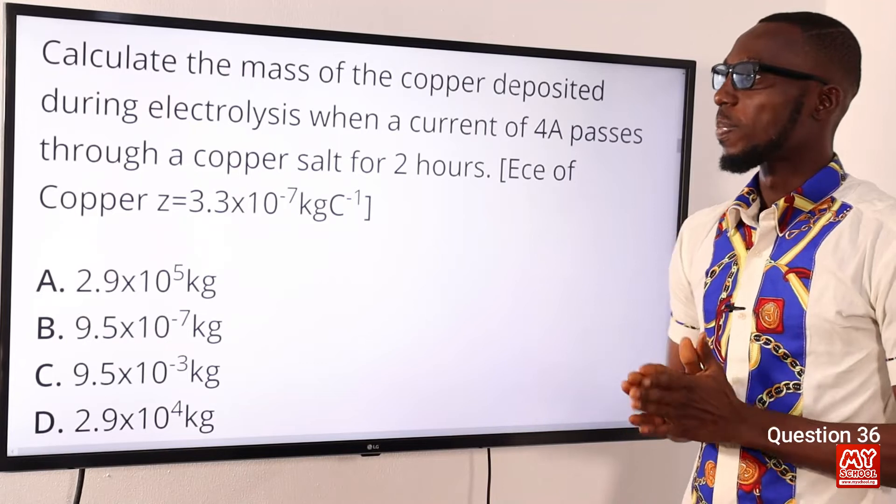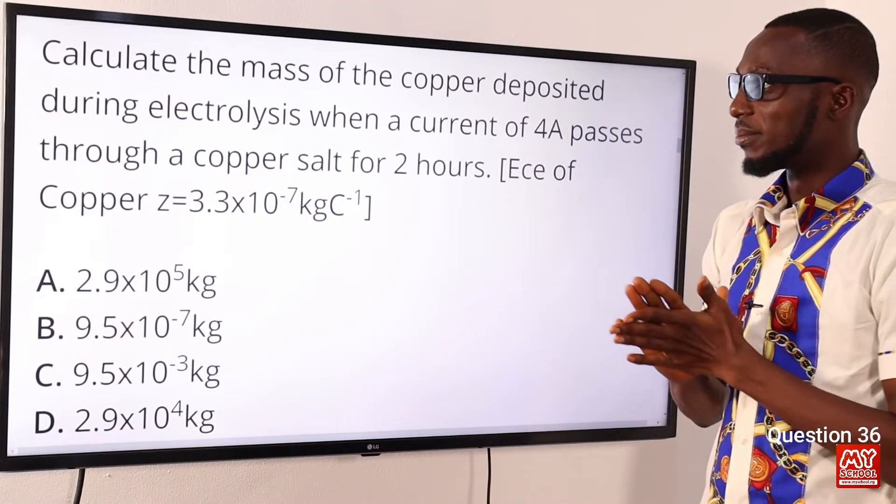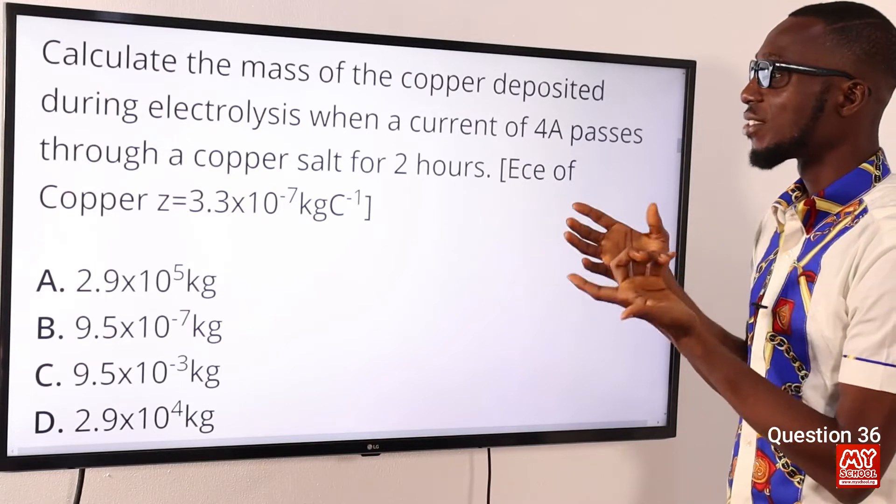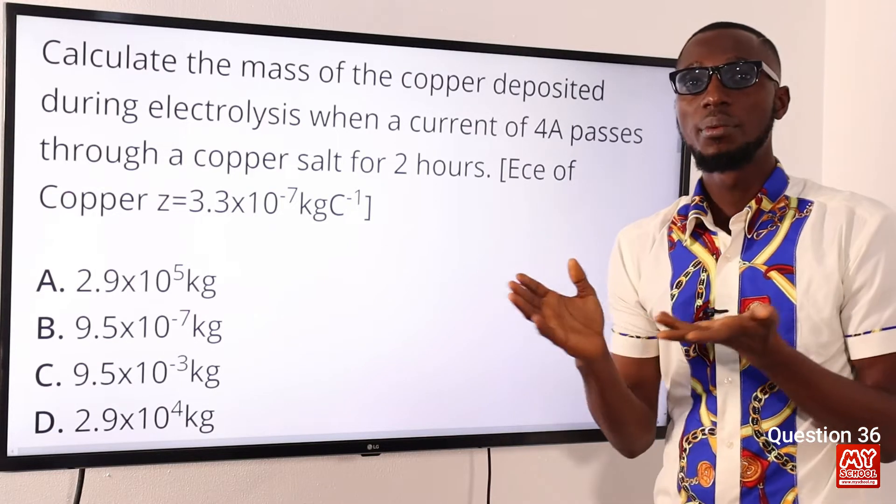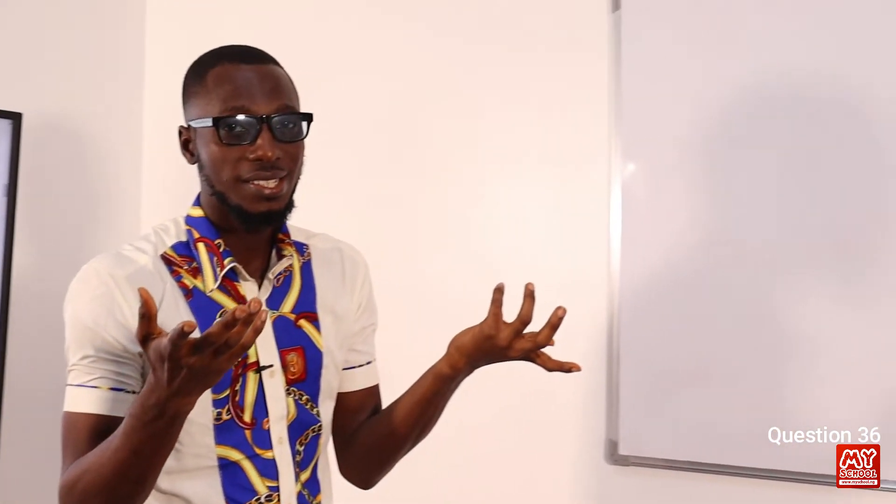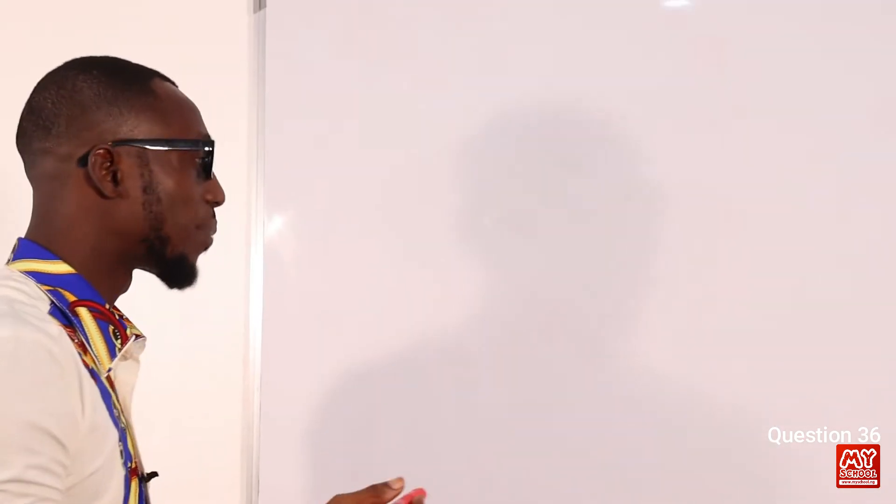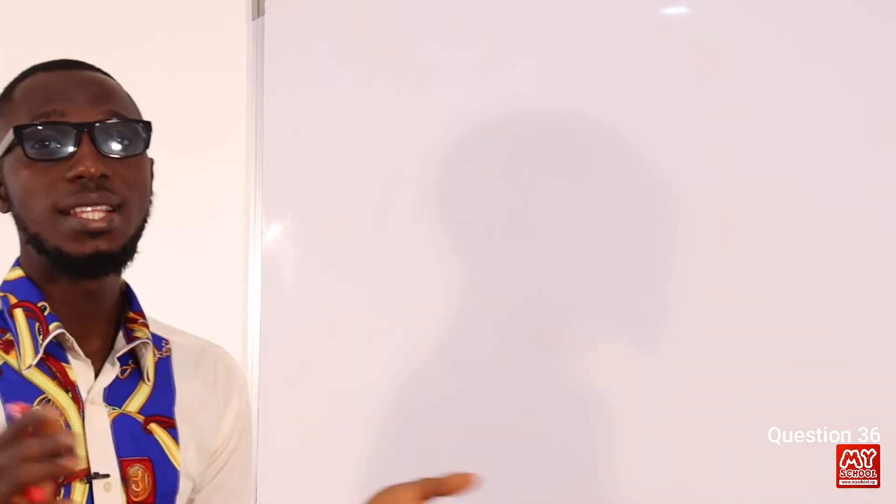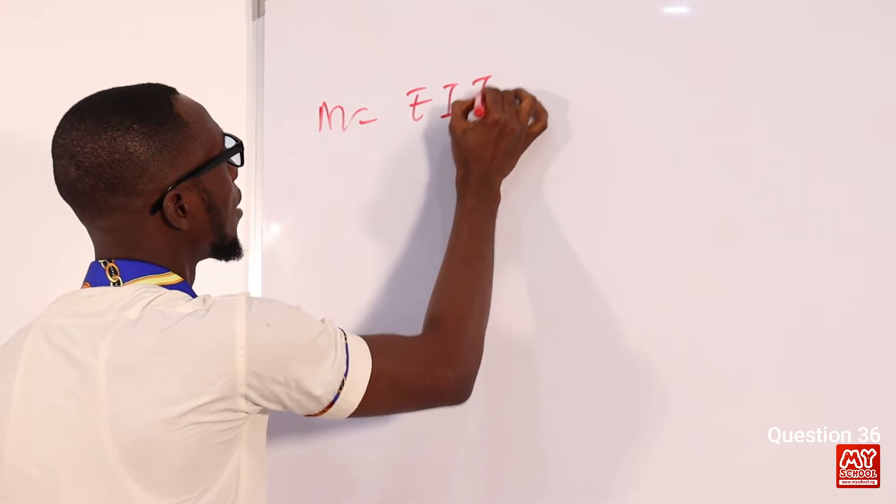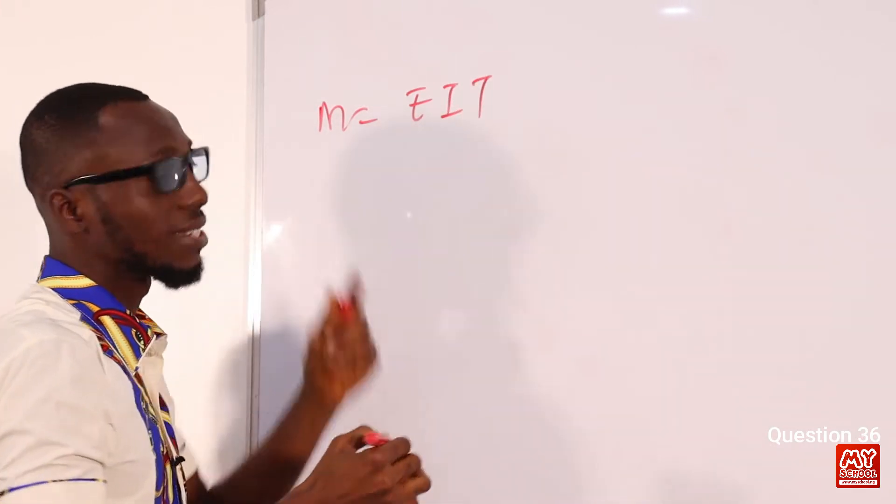Number 36. Calculate the mass of the copper deposited during electrolysis when a current of 4 ampere passes through a copper salt for 2 hours. Remember that we are going to be using the Faraday first law of electrolysis, where we have M is directly proportional to Q. So that implies M equals to EIT. E is a constant, which sometimes is being represented with Z. So, we are going to have EIT or ZIT. So, we are asked to find the mass that will be deposited. We just know that E has a value for copper. It is 3.3 times 10 to the power minus 7.